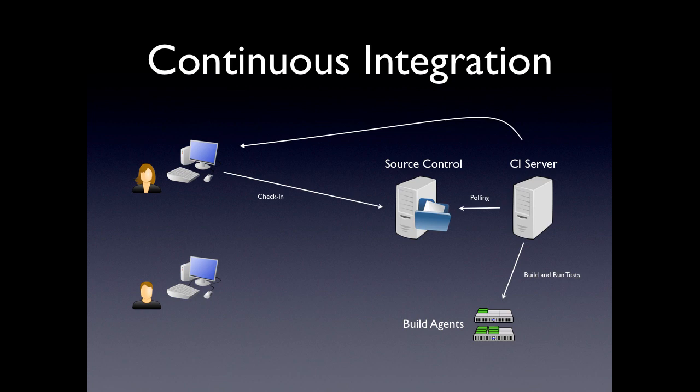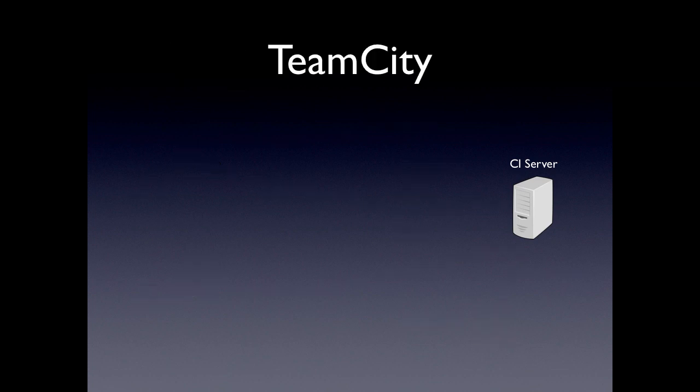What this prevents is other people checking out code that potentially has broken the build. If something is broken, since all developers on a team are usually notified of the status of the build, they now know that they shouldn't be checking out the code until they get a successful build. Notification can occur using different mechanisms such as email, a tray icon, ground notifications, etc.